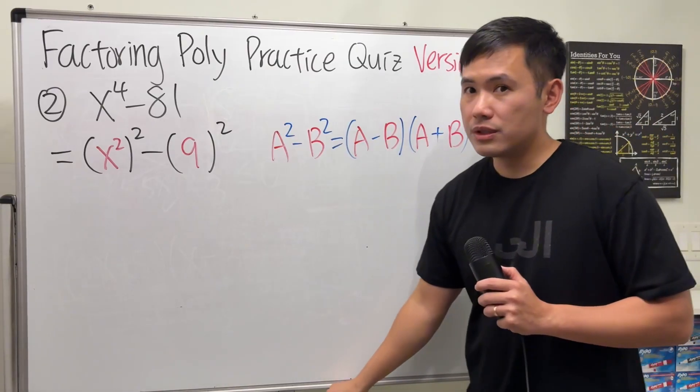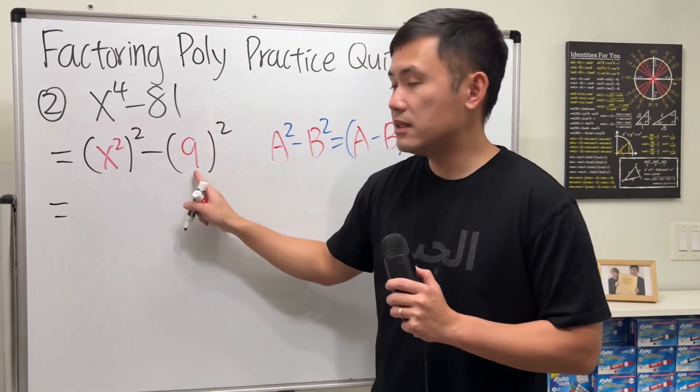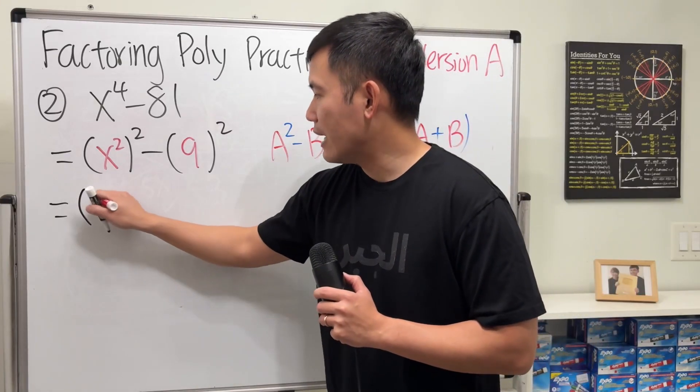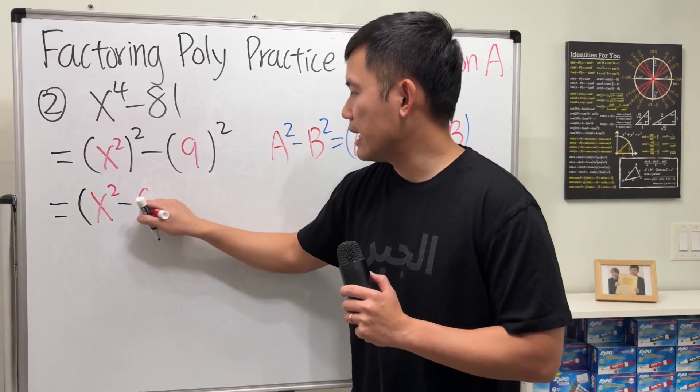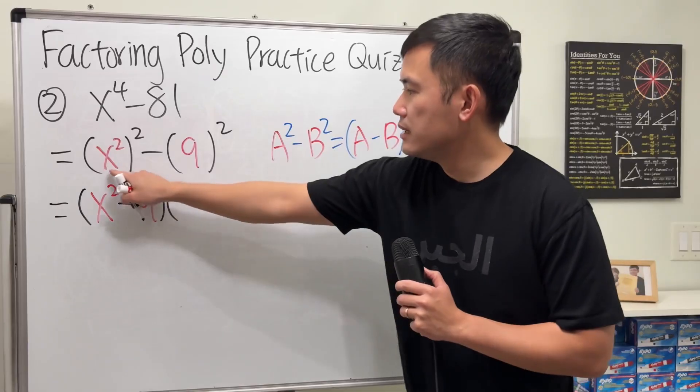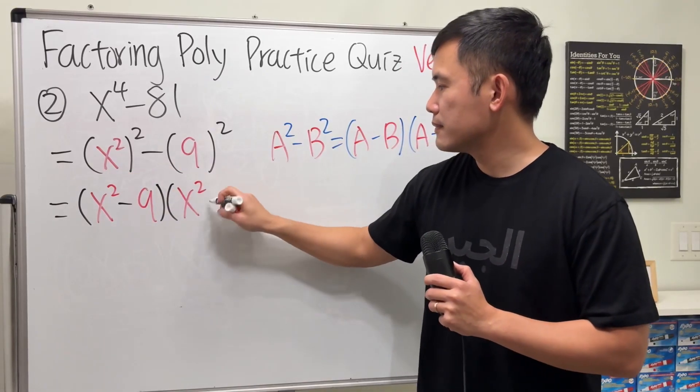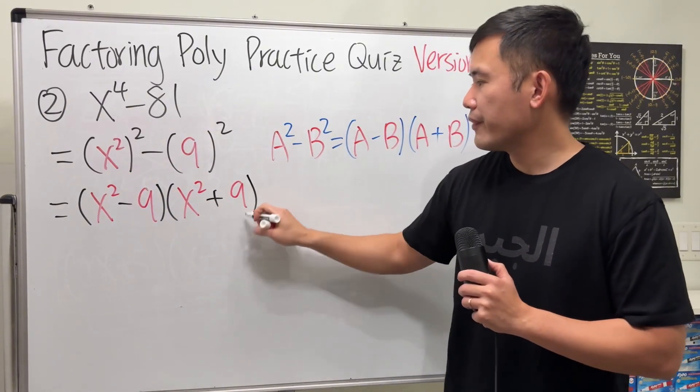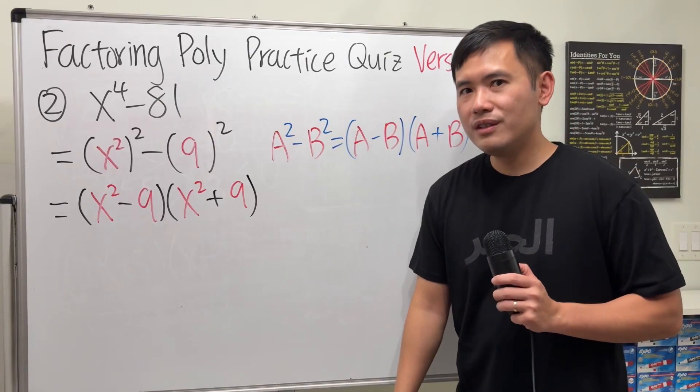And then we use the formula, we are going to get this is the a, this is the b. So first we have x squared minus 9, and then we multiply by this plus that. Okay, are we done? No.